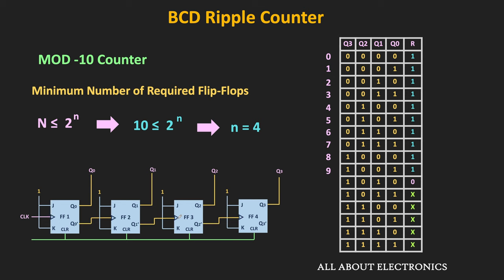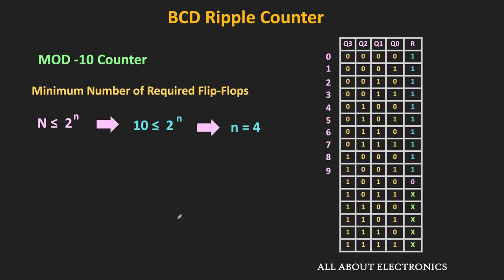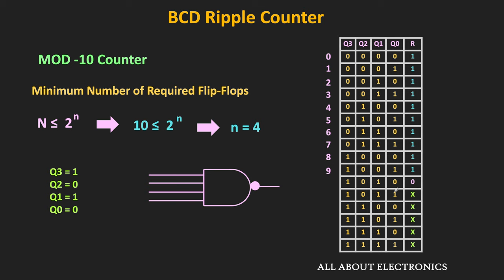For the count 1010, the output of the combinational circuit should become 0. The remaining 5 input combinations are don't care terms. Like we saw for the mod 5 counter, we can use a NAND gate in the feedback to generate this clear signal. To generate this clear signal, Q3 should equal 1, Q2 should equal 0, Q1 should equal 1, and Q0 should equal 0. So we connect Q3, Q1, Q2', and Q0' to the NAND gate. Up to 1001, the NAND gate output remains 1, and when the count reaches 1010, the NAND gate output becomes 0, resetting all flip-flops.